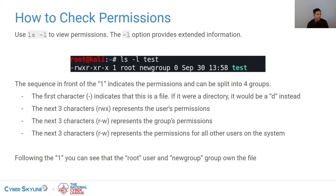In this example, the user owner has permission to read, write, and execute this file. The users in the group that owns this file can read and execute it. Everyone else on the system can also read or execute the file, but they cannot write to it — they cannot make any updates. After the link count, you see the username of the owner of the file, then the name of the group that owns the file, along with the file size and last modified date.